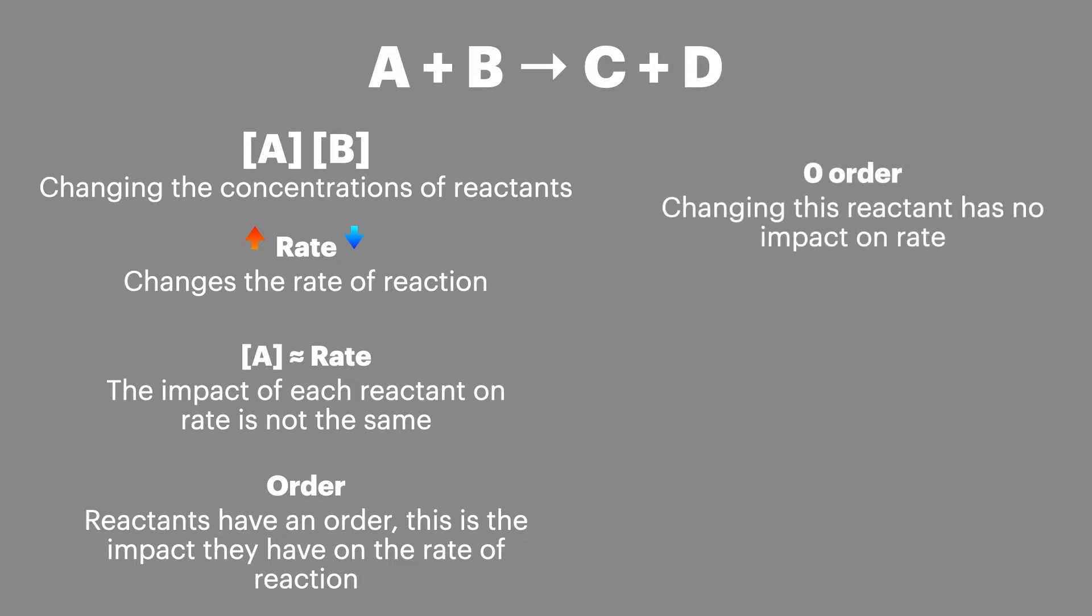A zero order reactant will have no impact on rate. A first order reactant will have a directly proportional impact on rate so if you double the concentration of a first order reactant you would double the rate.